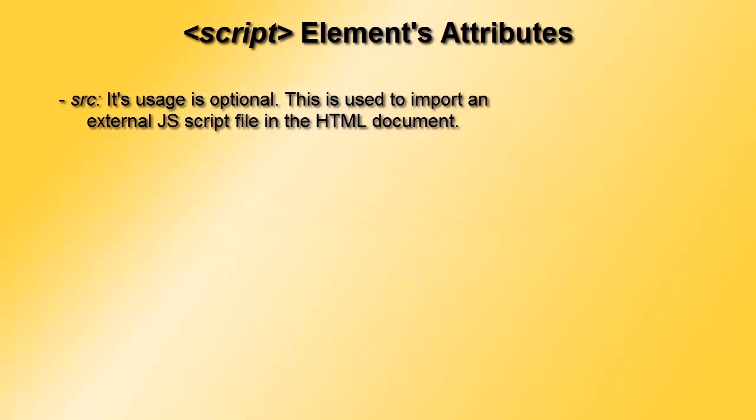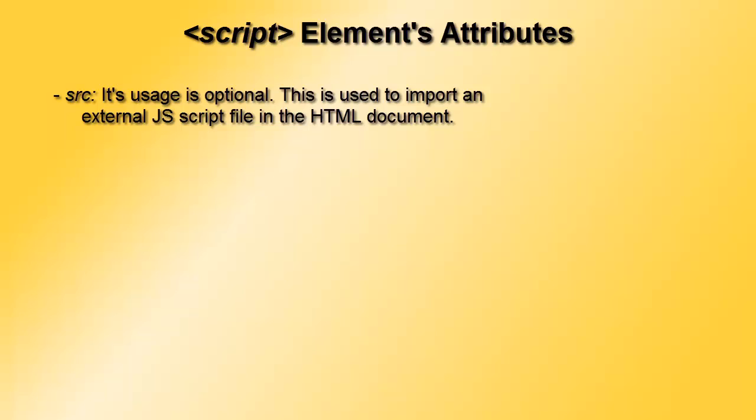The first attribute we will look at is the src or source attribute of the script element. This source attribute is optional to use and it imports the external JavaScript file into the HTML document. We place the path to the external JavaScript script as its value, and the browser then downloads that script when the page is requested from the server.